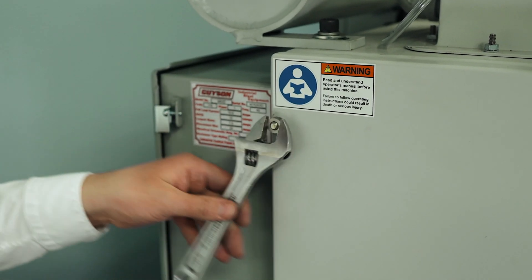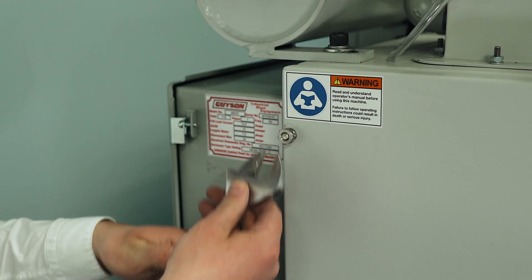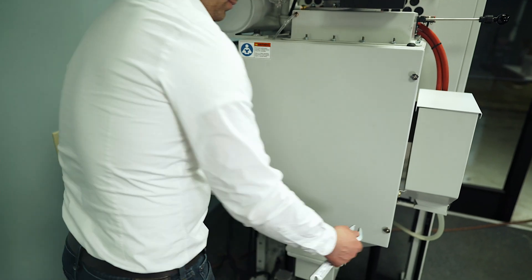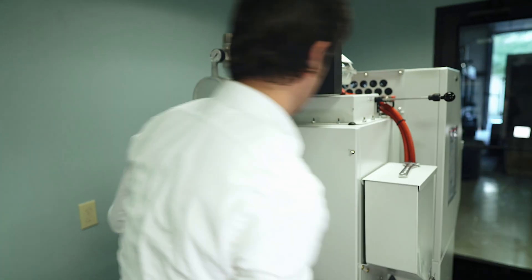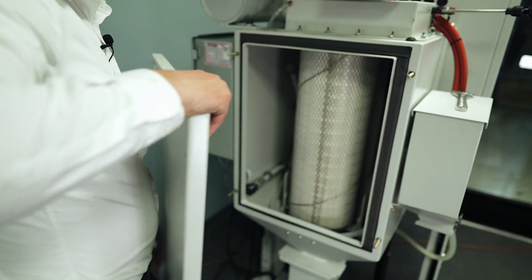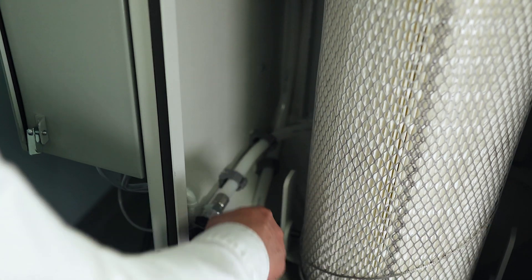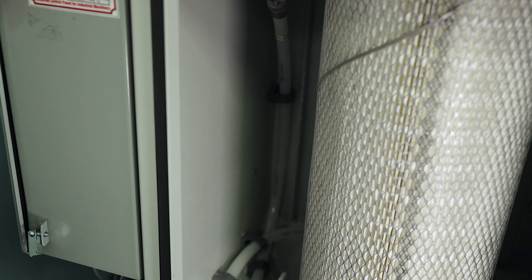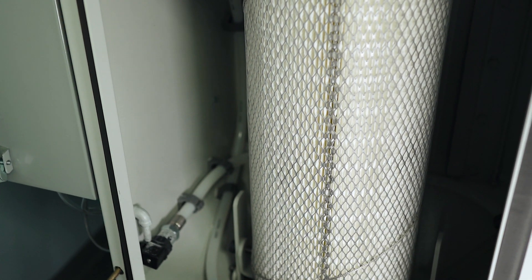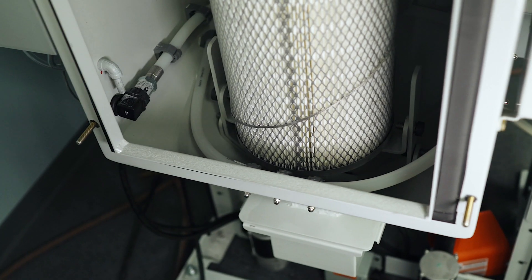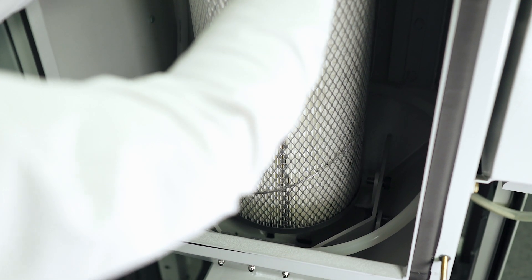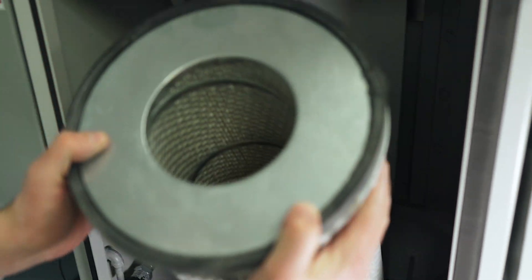In order to change the dust collector filter, remove the nuts holding on the dust collector door. This hose that runs around the perimeter of your dust collector is the fire suppression unit. In the event of a fire inside your dust collector, that hose will discharge and will extinguish the fire. To change the filter, push this lever backwards while holding the filter. This permits the filter to be able to lower and tilt towards you.